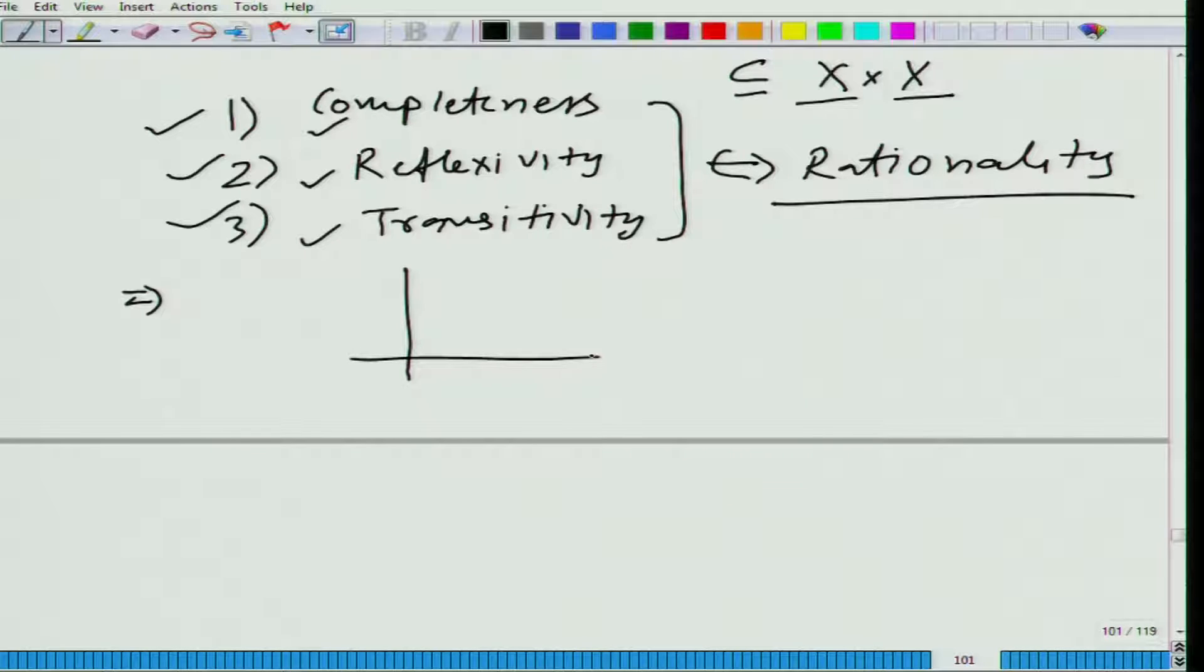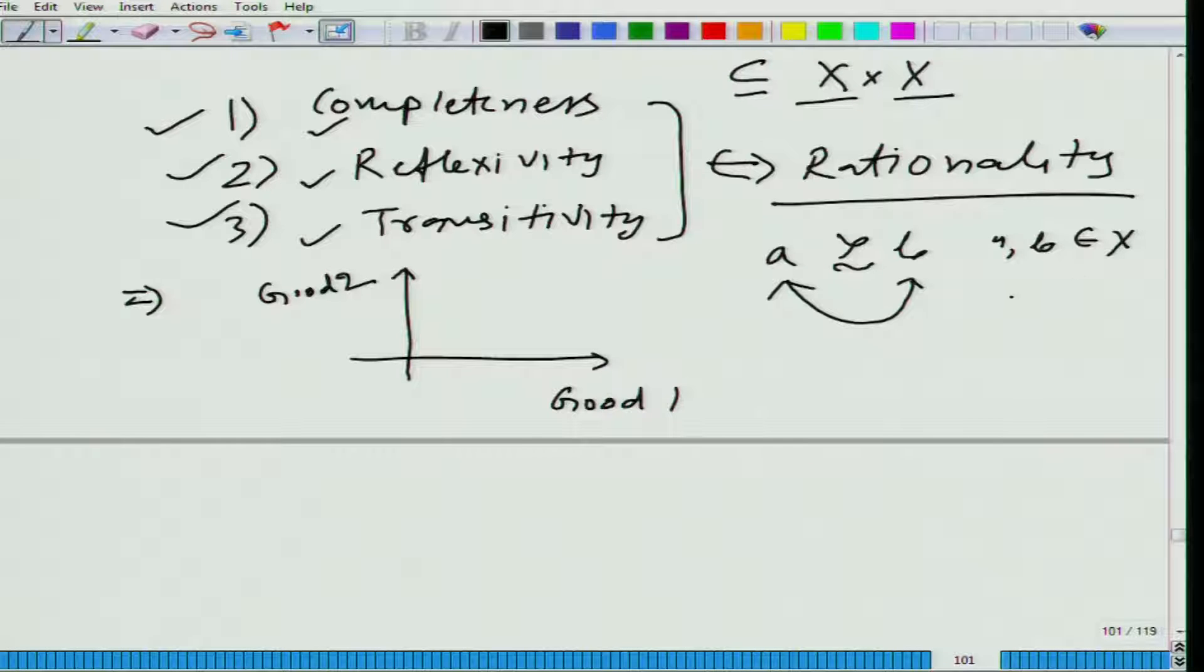Let us say a person, just for simplicity, let us take an example of two goods - good one and good two. You are already familiar with this relation. What does it mean? Is at least as good as, or at least as preferred as. This is a relation. When I say a is at least as good as b, it is establishing a relationship between a and b, and both are elements of x. That is why this relationship is defined on x.